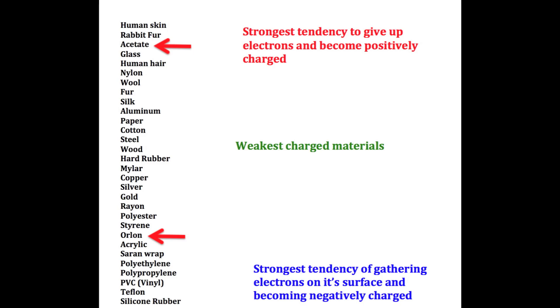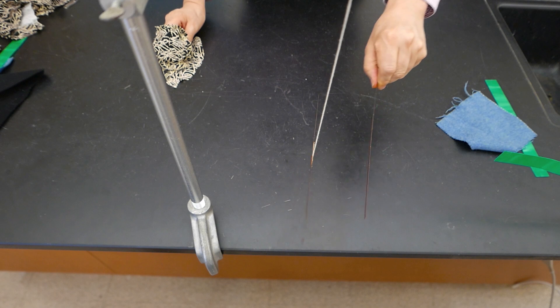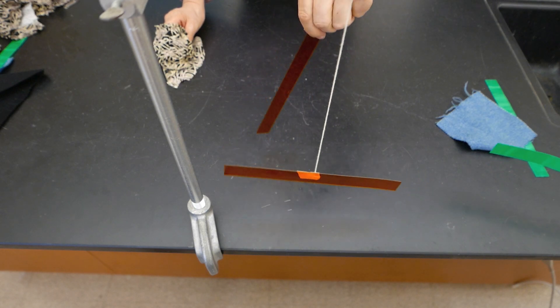Now let's try it again. In this case I'm going to use the acetate strips and rub them with the wool. And as I get it near it, once again we see that it's pushing it away also.